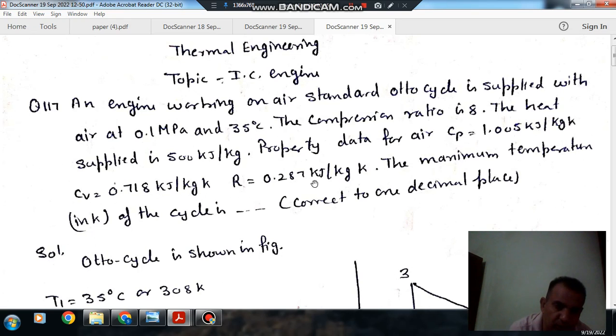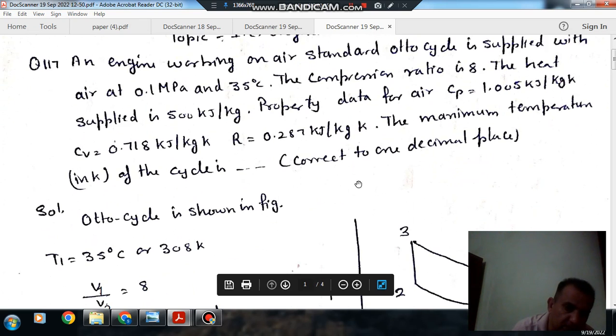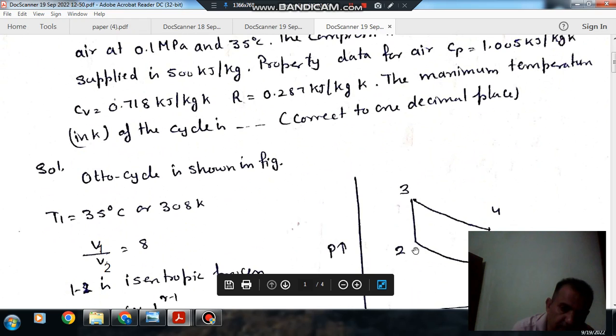And cv is equal to 0.718 kilojoule per kilogram per degree Kelvin. R is equal to 0.287 kilojoule per kilogram per degree Kelvin. The maximum temperature in Kelvin of the cycle is dash, correct to one decimal place. So this is the Otto cycle and 1-2 is your isentropic compression.